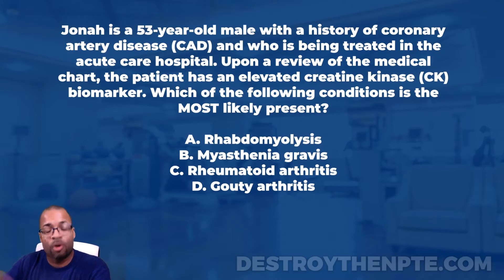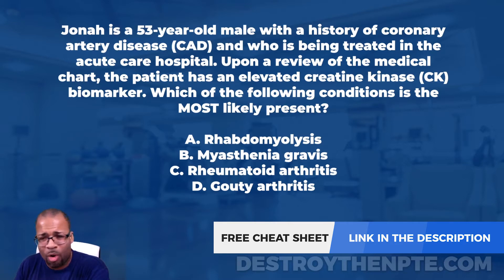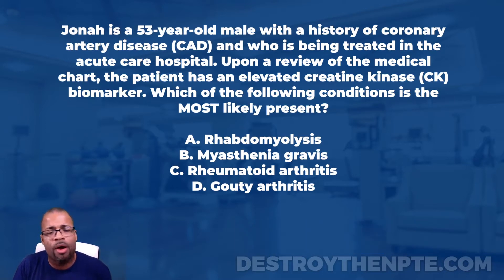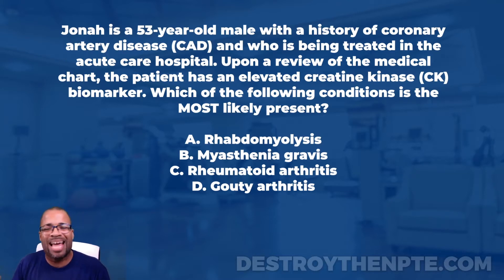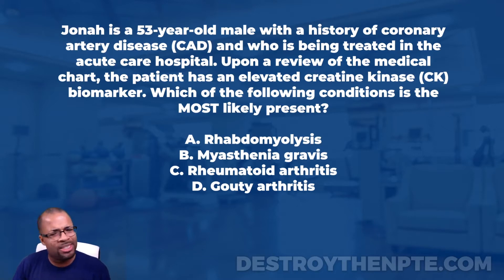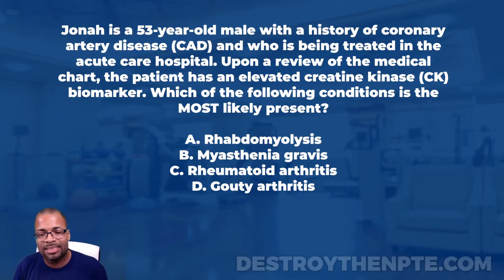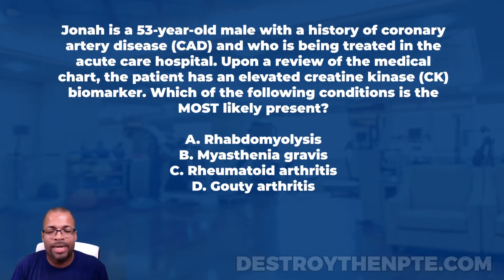For this week's clinical file, we have Jonah, a 53-year-old male with a history of coronary artery disease who is being treated in the acute care hospital. Upon review of the medical chart, the patient has an elevated creatine kinase biomarker. Which of the following conditions is most likely present? A: rhabdomyolysis, B: myasthenia gravis, C: rheumatoid arthritis, D: gouty arthritis.